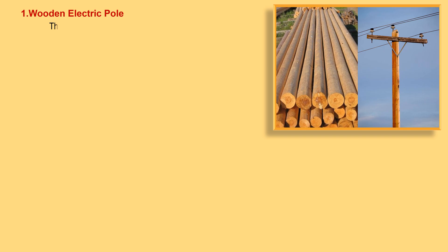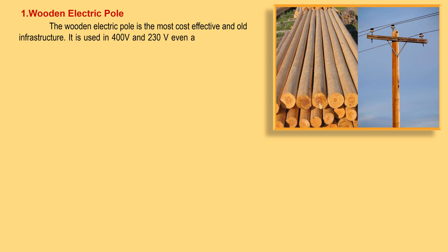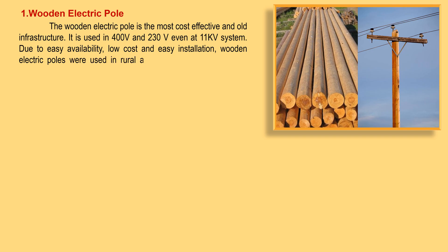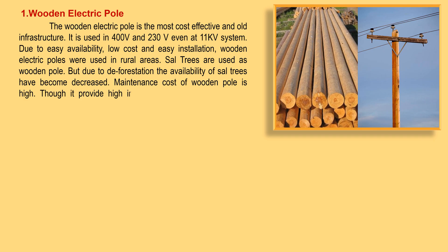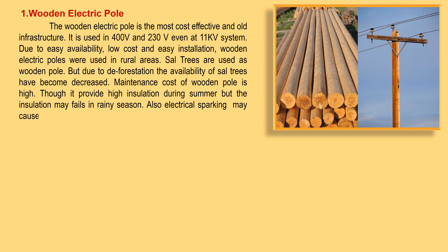The wooden electric pole is the most cost-effective and old infrastructure. It is used in 400V and 230V, and even at 11kV systems. Due to easy availability, low cost, and easy installation, wooden poles were used in rural areas. Salt trees are used as wooden poles, but due to deforestation their availability has decreased. Maintenance cost of wooden poles is high. Though it provides high insulation during summer, the insulation may fail in rainy season, and electrical sparking may cause a fire on the wooden pole.